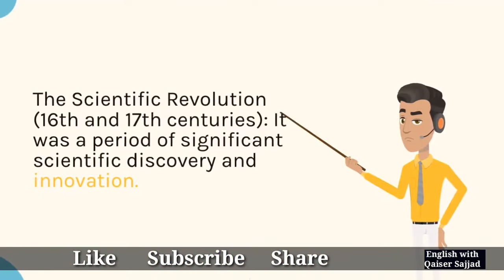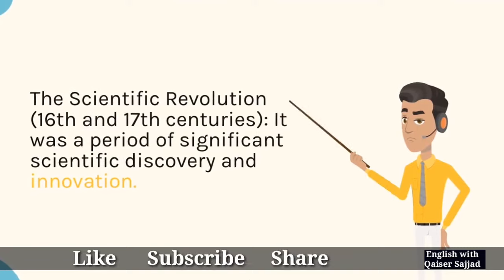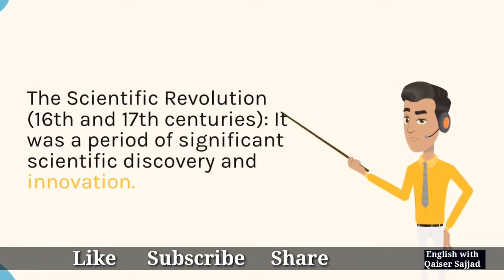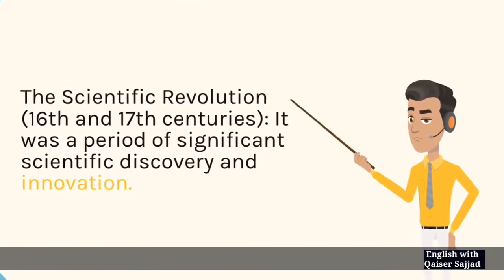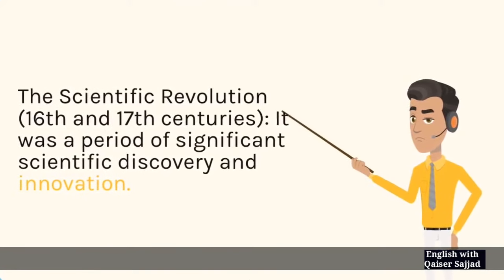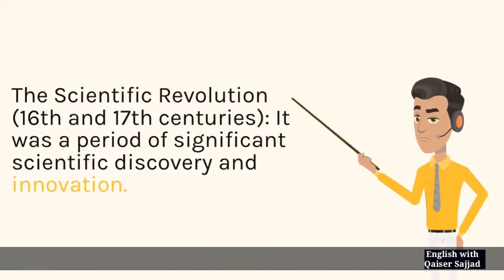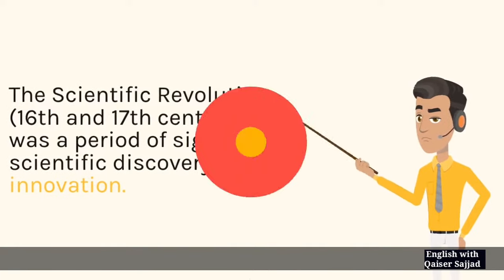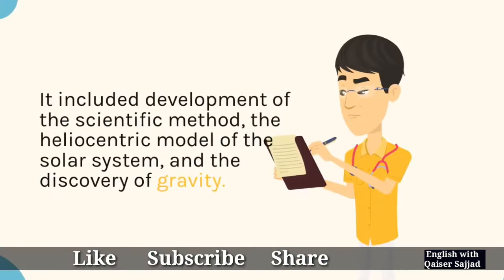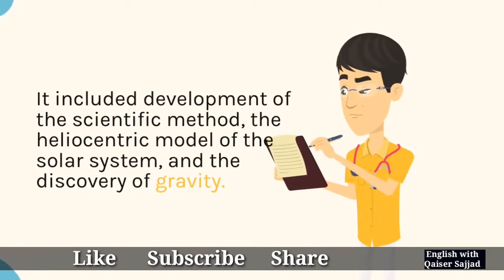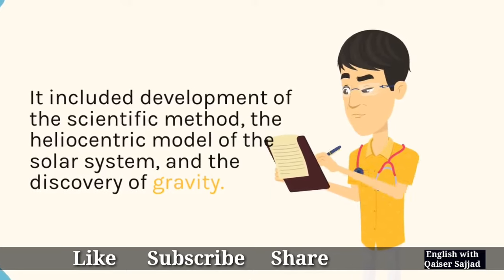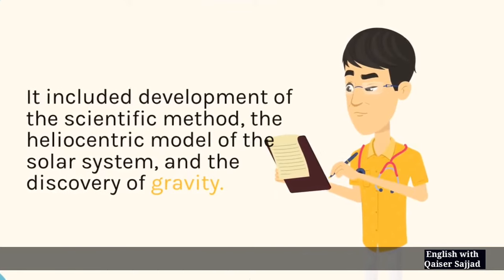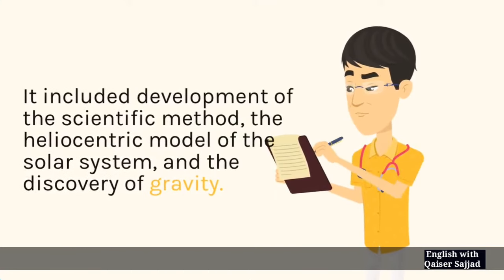The Scientific Revolution of the 16th and 17th centuries was a period of significant scientific discovery and innovation. It included the development of the scientific method, the heliocentric model of the solar system, and the discovery of gravity.